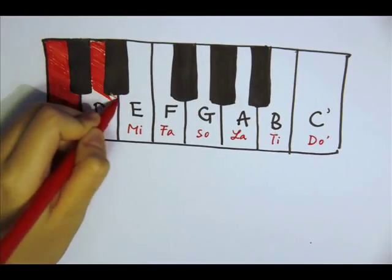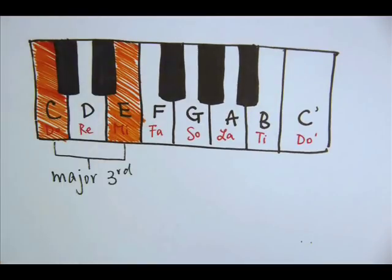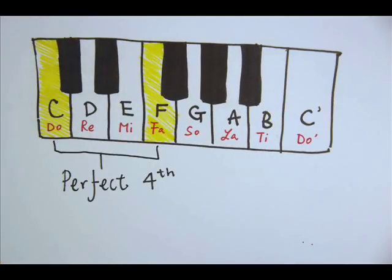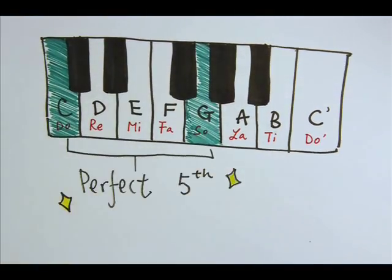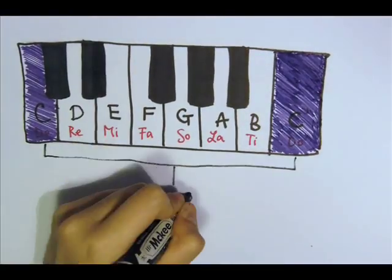Playing DO and RE together is described as a major second interval, because RE is the second note in the scale. Next is the major third interval, because MI is the third note in the scale. This is the perfect fourth interval. However, the word perfect is not because this interval sounds better. It is related to other musical concepts, which will not be discussed here. Similarly, this is the perfect fifth interval. Finally, DO and DO played together is called an octave.